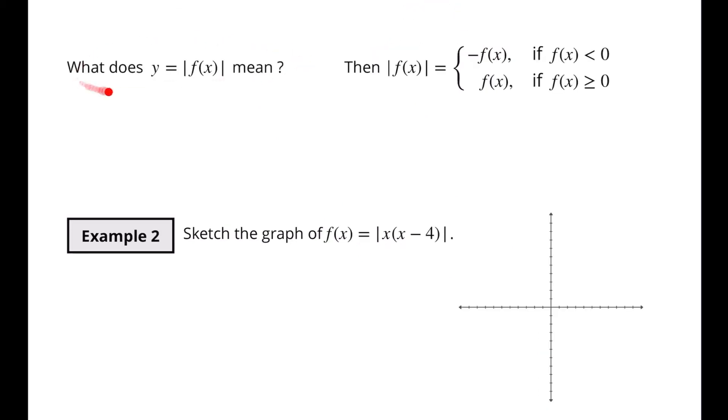So what does Y equals the absolute value of F of X mean? That means take the absolute value of the result or what we call our output of the function. We often think of this as the Y value. We're not talking about the X values. Now we're talking about the whole output.